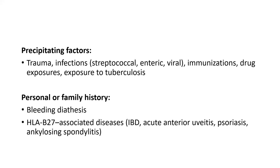In the family history, ask about bleeding disorders such as hemophilia and HLA-B27-associated diseases, which can be familial — including inflammatory bowel disease, oligoarticular JIA features, psoriasis, and ankylosing spondylitis associated with enthesitis-related arthritis.